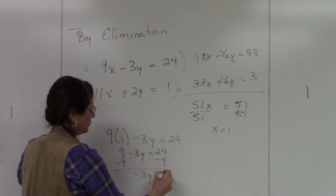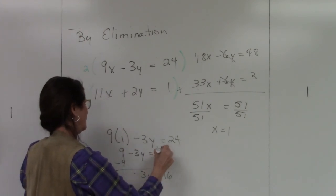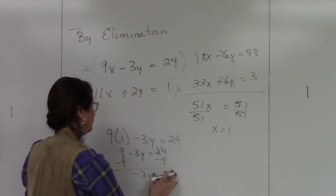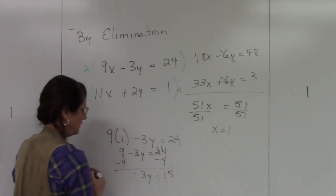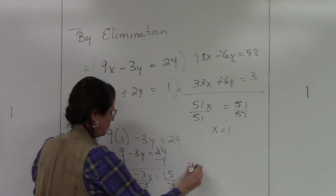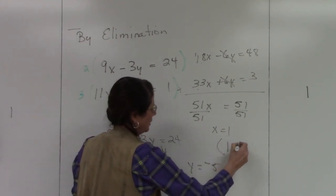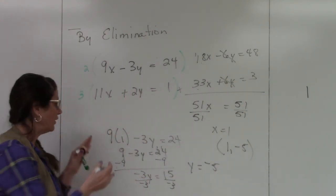Two-step equation. Subtract 9, I end up with negative 3y equals 15. And then I'm going to divide both sides by negative 3, so I get y equals negative 5. So my solution is (1, -5).